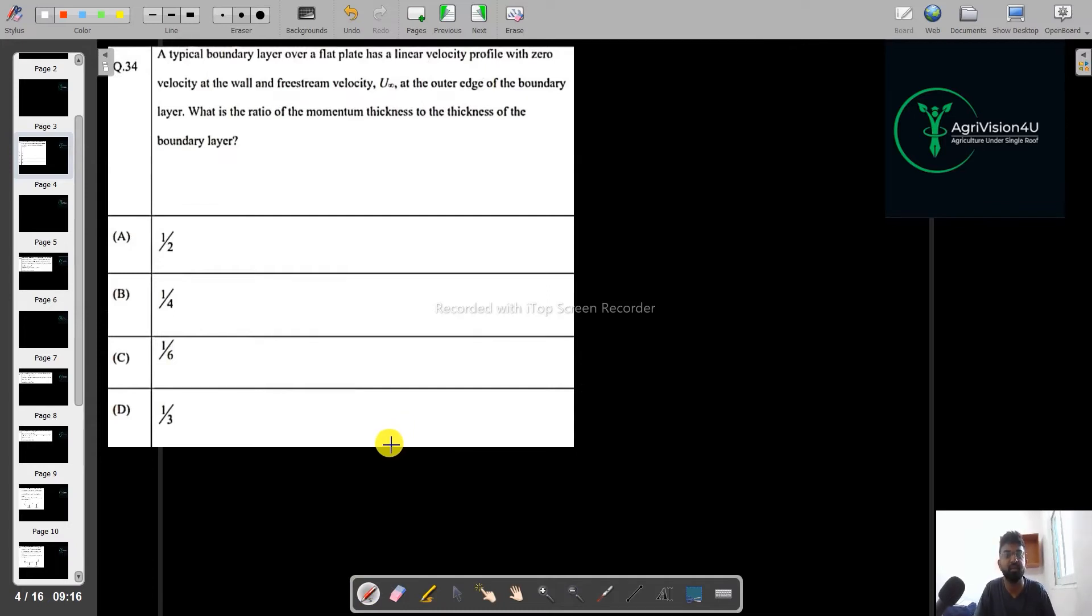A typical boundary layer over a flat plate, so this is the flat plate and this is the boundary layer, has a linear velocity profile with the zero velocity at the wall and the fristim at u infinity at the outer edge of the boundary layer. What is the ratio of the momentum thickness to the thickness of the boundary layer?